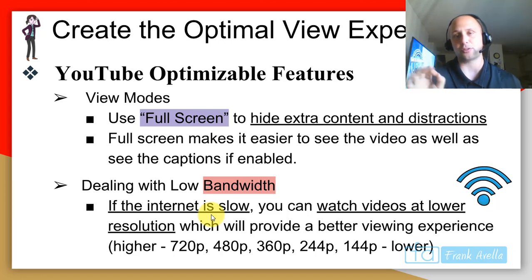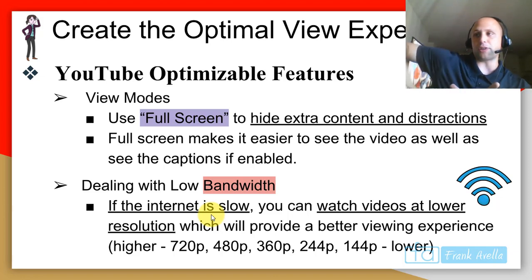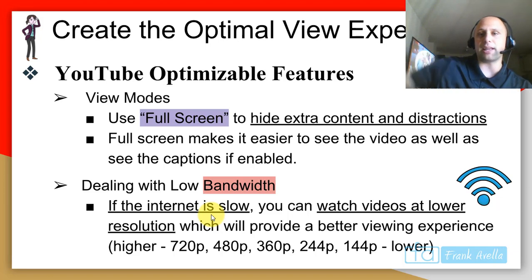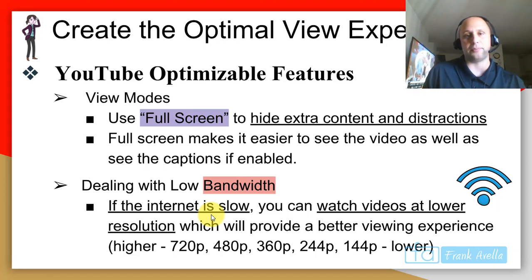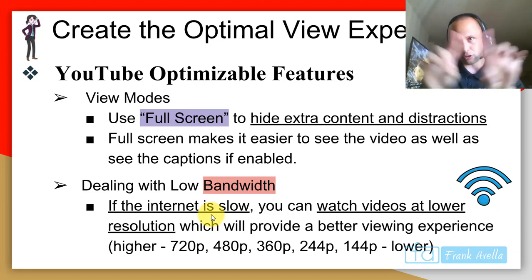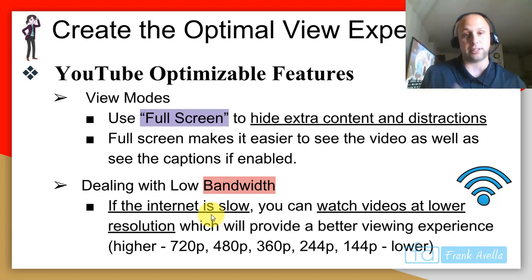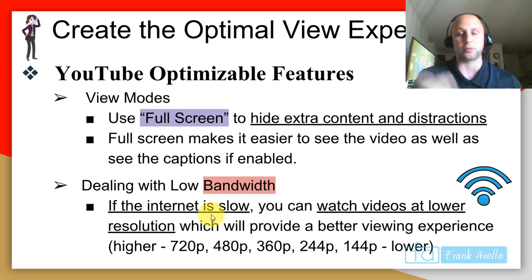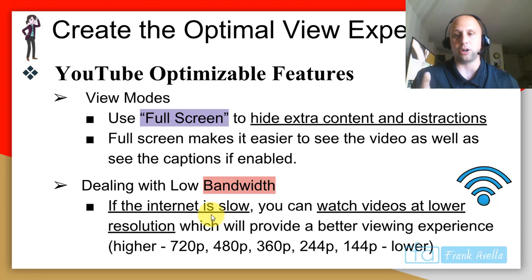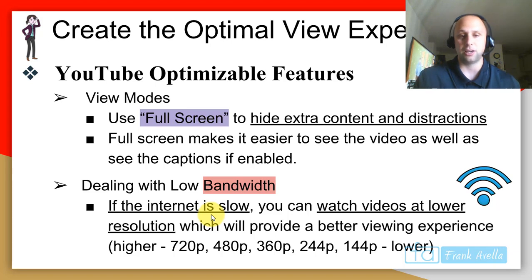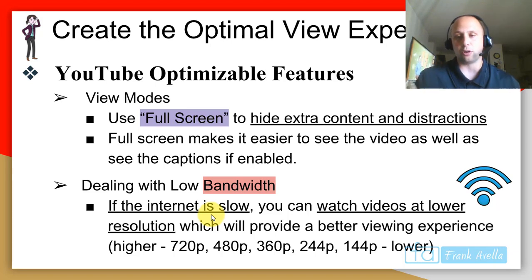View modes: use full screen to hide extra content and distractions. When you first watch a YouTube video it's not in full screen, so there are distractions on the right-hand side — related videos and videos underneath. If you want to focus on the content, go full screen. Full screen also makes it easier to see the captions. For low bandwidth, if the internet is very slow, you can watch videos at a lower resolution — from 720p down to 144p.